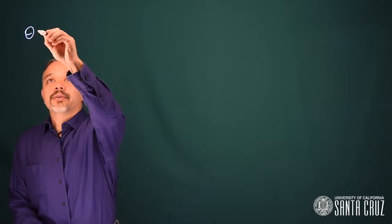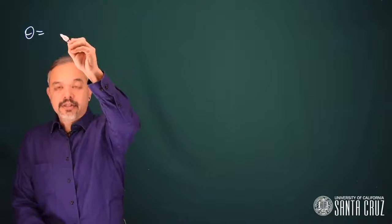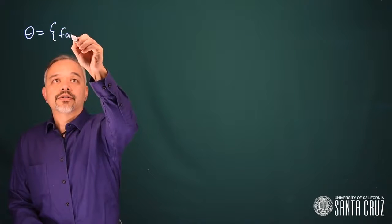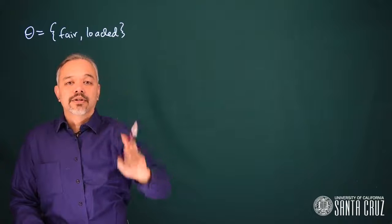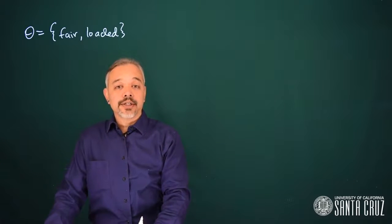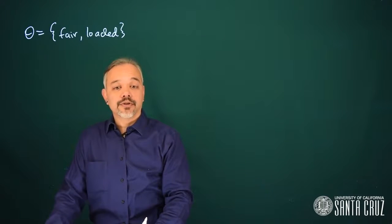So in order to perform inference, we need to define a likelihood. In this case, we'll start by defining the unknown parameter theta, and this is either the coin is fair or it's a loaded coin. So our unknown parameter is which coin it is. Is it a fair coin or is it the loaded coin?